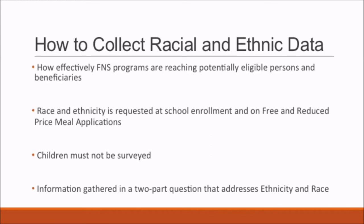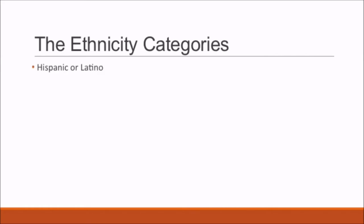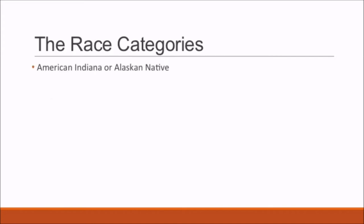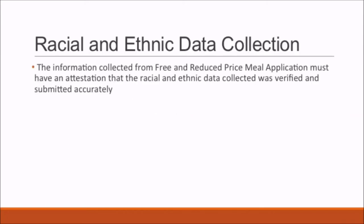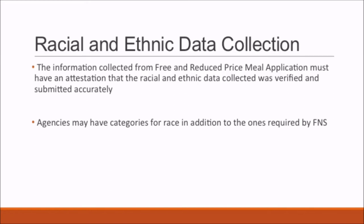Information must be gathered with a two-part question addressing ethnicity and race. Ethnicity categories include Hispanic or Latino and non-Hispanic or Latino. Race categories include American Indian or Alaskan Native, Asian, Black or African American, Native Hawaiian or other Pacific Islander, and White. Unlike ethnicity, applicants may select more than one race. When information is collected from an electronic free and reduced price meal application, there must be an attestation that the racial and ethnic data collected was verified and submitted accurately. Agencies may have additional race categories, but these must be mapped and extracted to the required FNS categories.